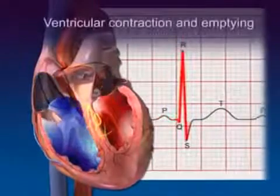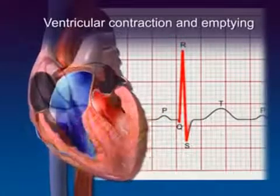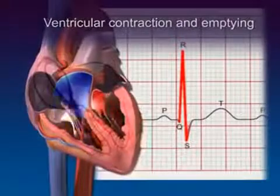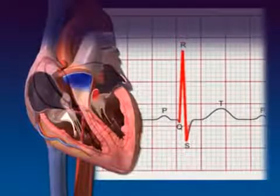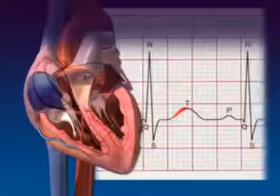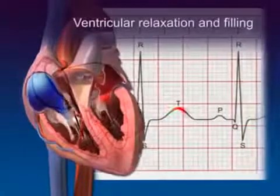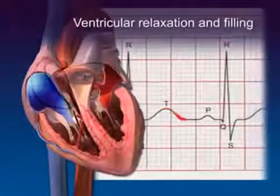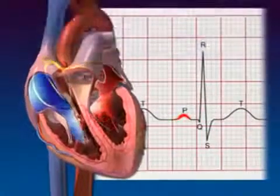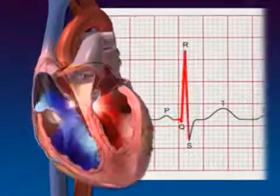The QRS complex initiates ventricular contraction, which pumps blood out of the heart. During this time, the atria repolarize and relax. The T-wave initiates ventricular relaxation, during which the ventricles fill once again. One cardiac cycle is complete.